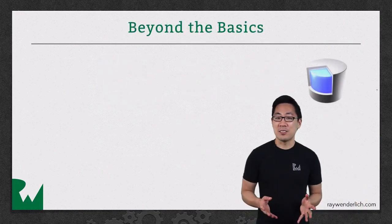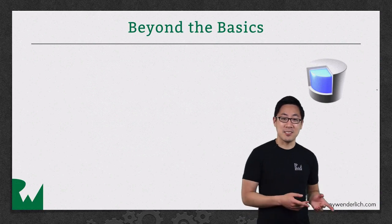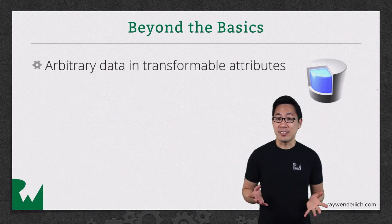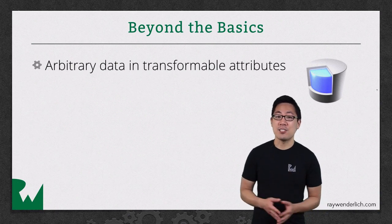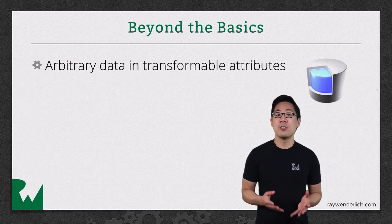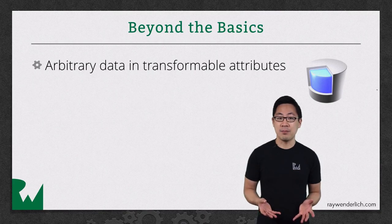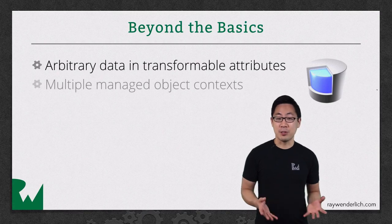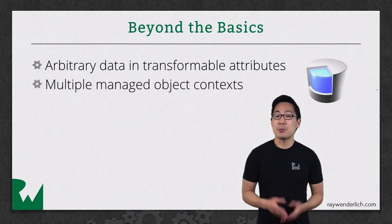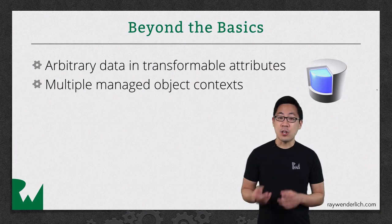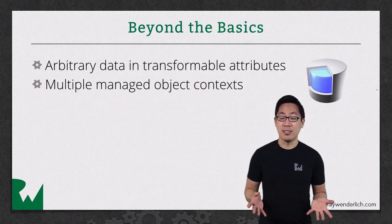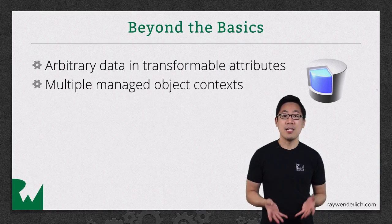Another goal of this series is to go beyond the basics. Rather than just store strings, you can now store arbitrary data, as well as common Cocoa objects such as images and colors using transformable attributes. And instead of a single managed object context, you've seen some examples of what to do with multiple contexts. With NSCoding and NSValueTransformer, you can store just about anything, including your own custom data types in Core Data.